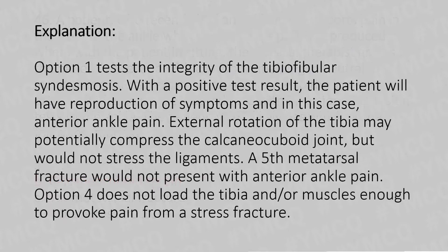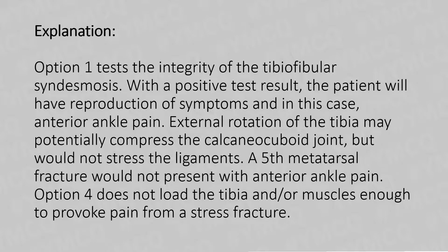Explanation to this question: Option A tests the integrity of the tibial-fibular syndesmosis. With a positive test result, the patient will have reproduction of symptoms — in this case, anterior ankle pain. External rotation of the tibia may potentially compress the calcaneo-cuboid joint but would not stress the ligaments. A fifth metatarsal fracture would not present with anterior ankle pain. Option D does not load the tibia or muscles enough to provoke pain from a stress fracture.